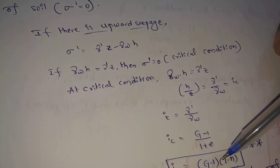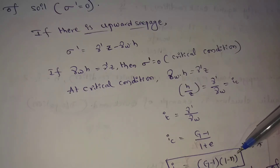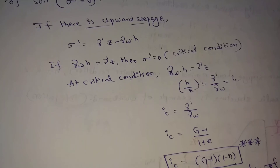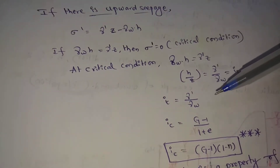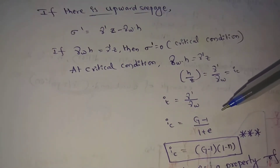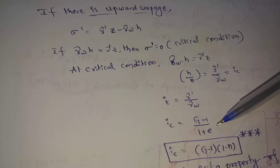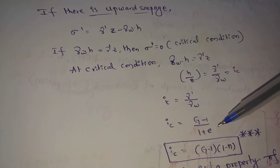Next: Ic equals G minus 1 by G minus 1 into 1 minus n. Here the void ratio has been converted to porosity form — both expressions give the same values.